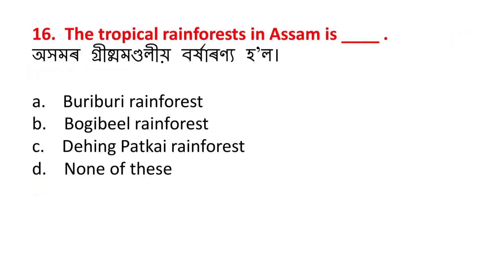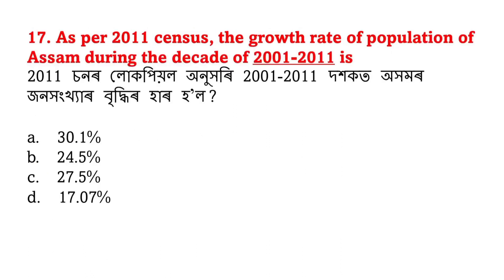The tropical rainforest in Assam — which is the tropical rainforest? The answer is Dihing Patkai Rainforest, now known as Dihing Patkai National Park.